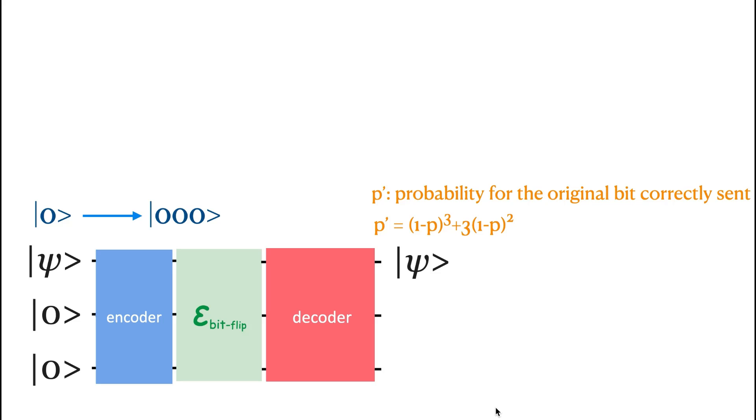In the final step, the information will then be passed to the decoder. And the decoder will then correct the information and at the output, we can get the information with the probability of p.